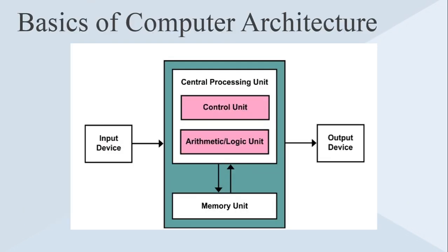We can start with the architecture of computer. This is the simplest representation of computer architecture and it consists of the input device, output device, central processing unit, and the memory unit.